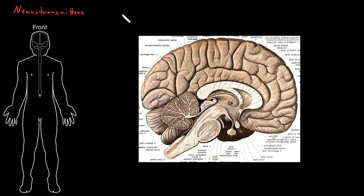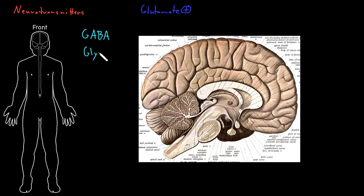For examples of neurotransmitters released by widely distributed neurons, the first is glutamate, which is the most common excitatory neurotransmitter of the entire nervous system. Then there's GABA — short for gamma-aminobutyric acid — and glycine, which are the most common inhibitory neurotransmitters: GABA in the brain and glycine in the spinal cord in particular. Neurons releasing these neurotransmitters are widely distributed and are involved in most functions of the nervous system.